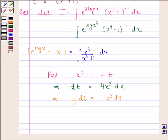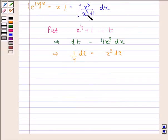So by substituting t in place of x to the power 4 plus 1, we get integral of 1 by t with respect to dt into 1 by 4. This is equal to 1 by 4 log mod t plus C. Now t is equal to x to the power 4 plus 1.